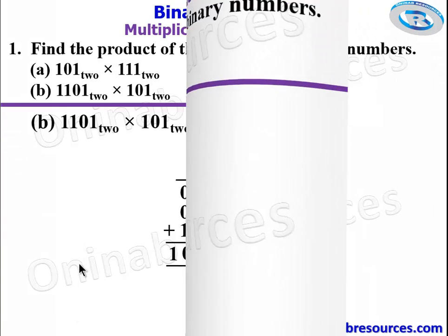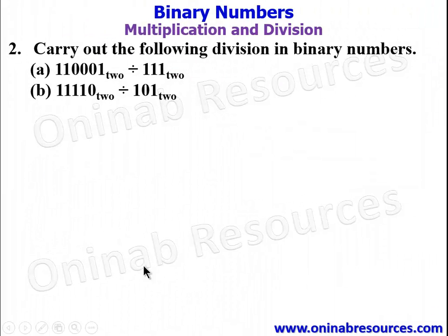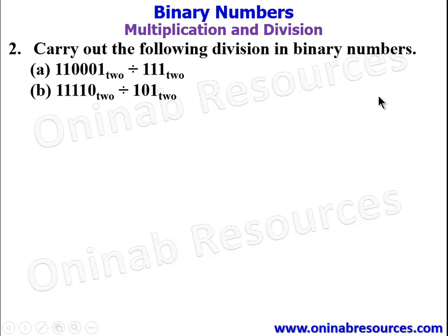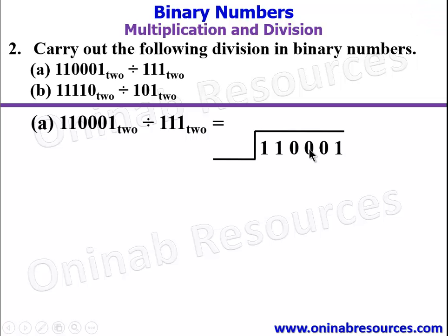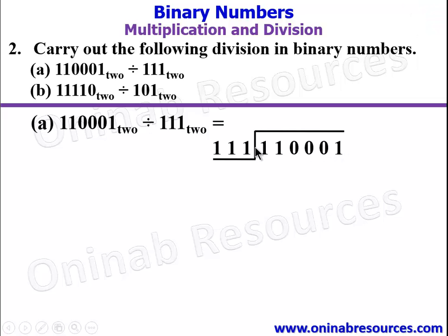We then go to problem 2. For problem 2, carry out the following division in binary numbers. Starting from part A, we are going for long division. We have 110001 divided by 111.